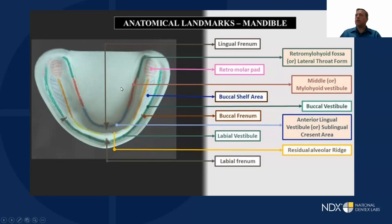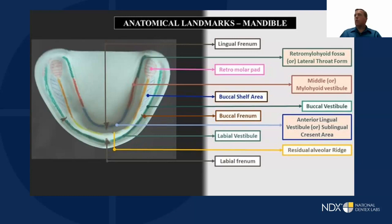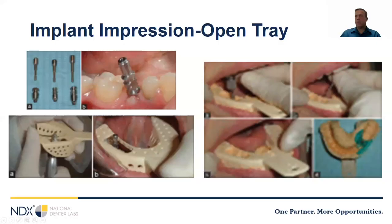Another area to be aware of is the retromyelohyoid fossa. Sometimes laboratories extend their mandibular dentures past the mylohyoid ridge — this is another area where you can coach your laboratory and say it would be good to end the denture right at that ridge. Also make sure you capture the buccal shelf, because that's where a lot of stability comes from for mandibular dentures, and it's really important for your laboratory.